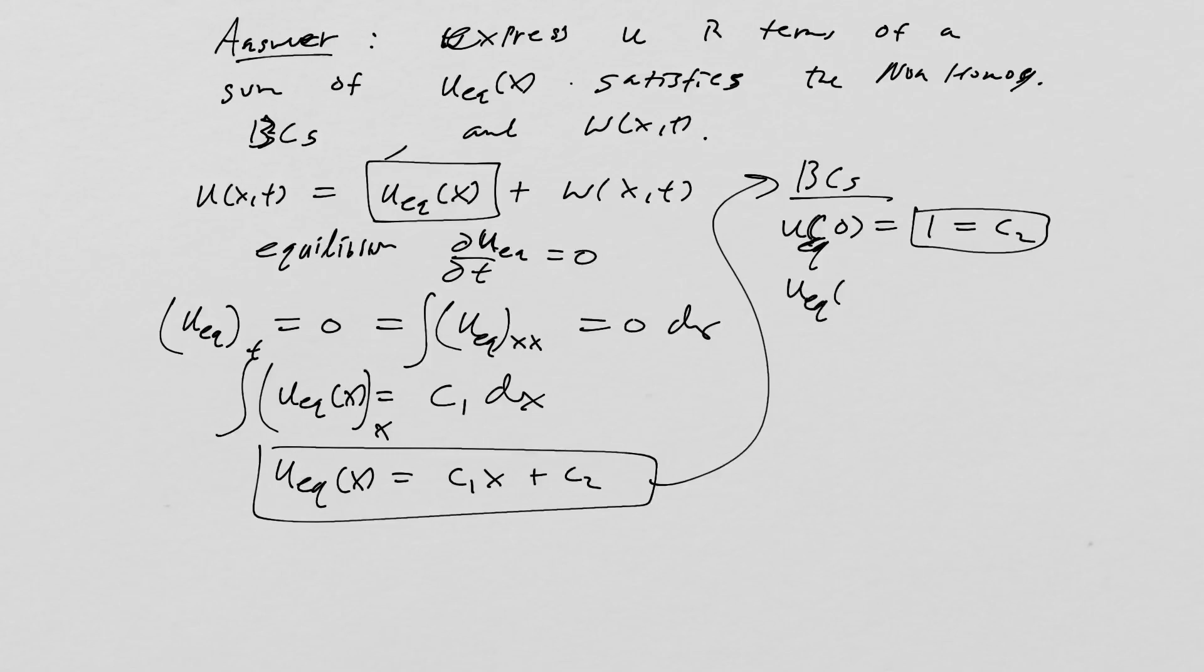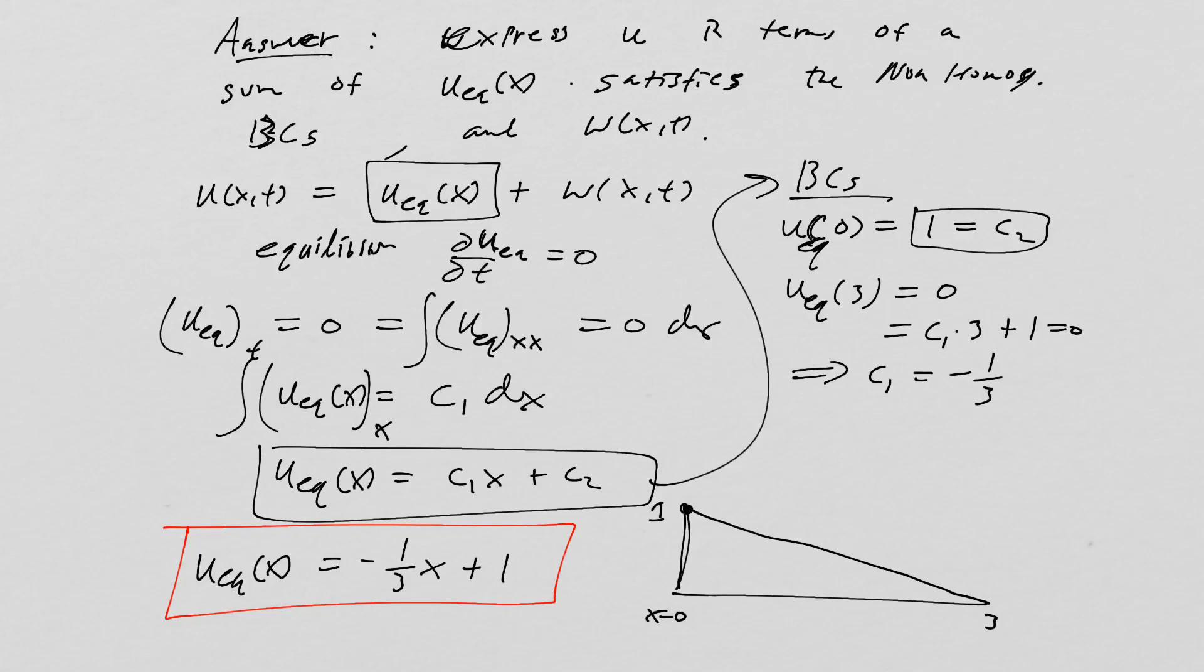Then we have to check the boundary conditions here. u_eq(0) is equal to 1, which equals c2. We got that one. And now u_eq(3) equals 0 equals c1 times 3 plus 1. Therefore, c1 is equal to negative 1/3. So u_eq equals negative (1/3)x plus 1. Let's take a moment to recognize what this solution is saying. If we have the temperature held at 1 at the x=0 mark and held at 0 at the x=3 mark, then we have a linear decline in temperature, a steady decline in temperature across the entire metal rod. That makes perfect physical sense.